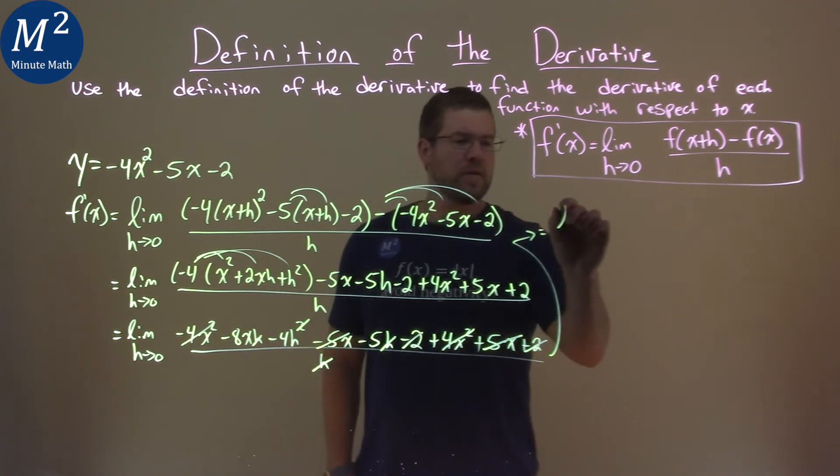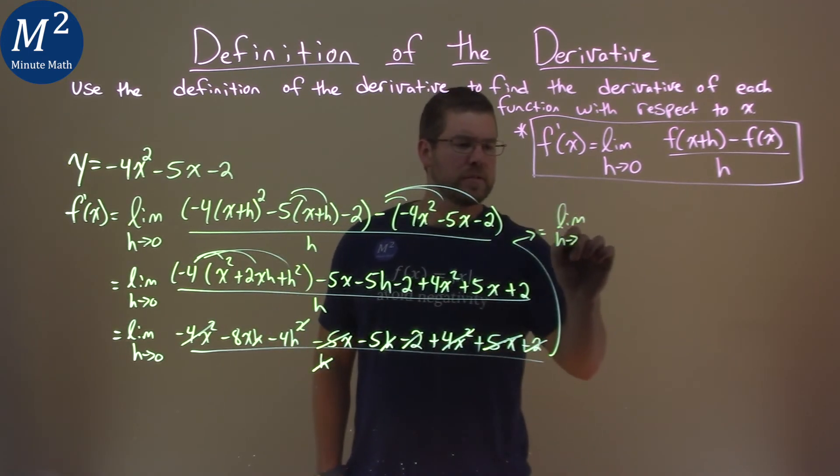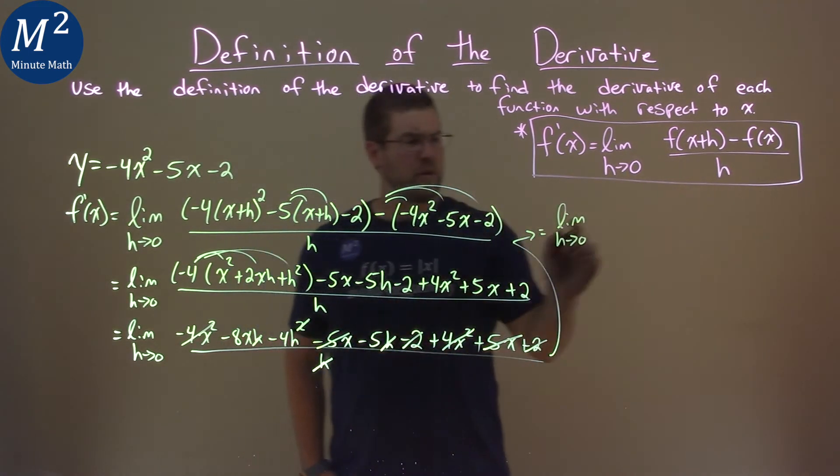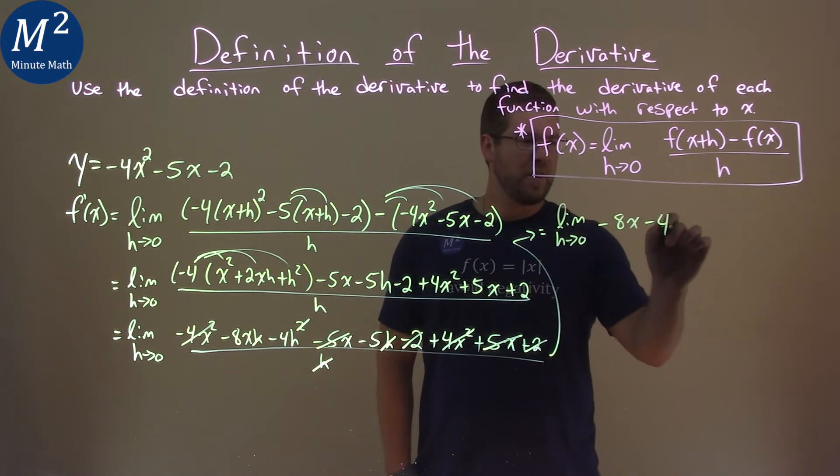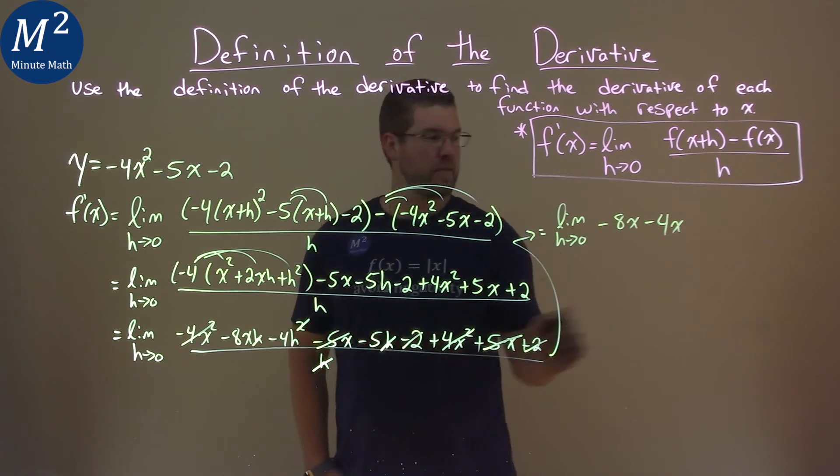So, let me put that up here. We have some room. And we still have the limit as h approaches 0. But it's much smaller now. Minus 8x minus 4h and then minus 5.